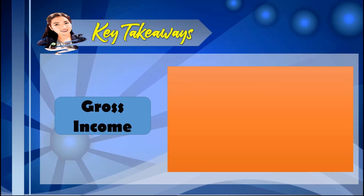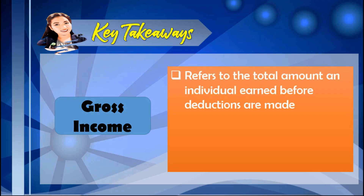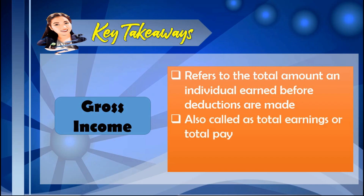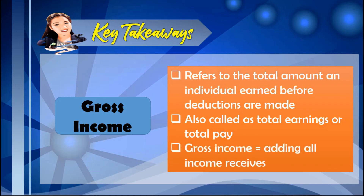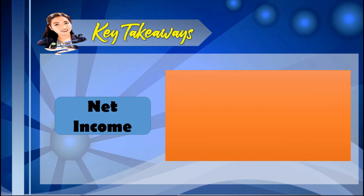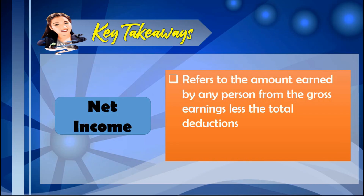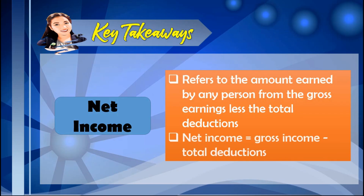Here are the important things to remember. Gross income refers to the total amount an individual earned before deductions are made — also called total earnings or total pay. To solve for it, just add all the income received. Net income refers to the amount earned from gross earnings less total deductions. To solve for it: gross income minus total deductions.